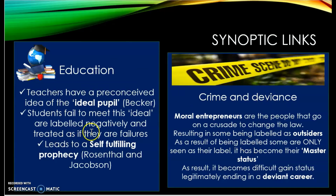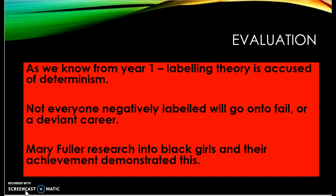We've got two synoptic links there: education from year one, and crime and deviance to come in year two. To evaluate: labelling theory is accused of determinism. Not everyone negatively labelled will fail or develop a deviant career. We know criminals who leave prison, reform, and get legitimate jobs. Fuller's research into black girls and their achievement demonstrated they can reject the negative label.